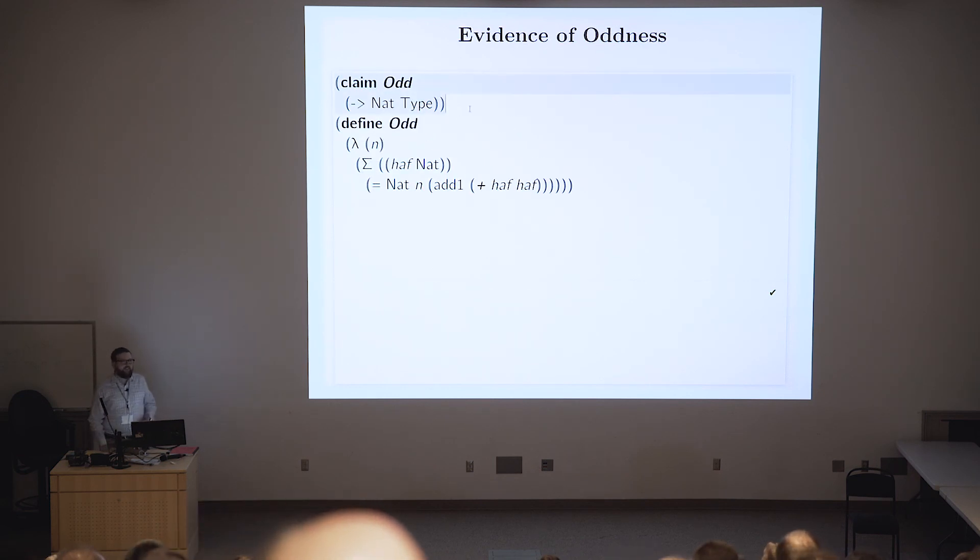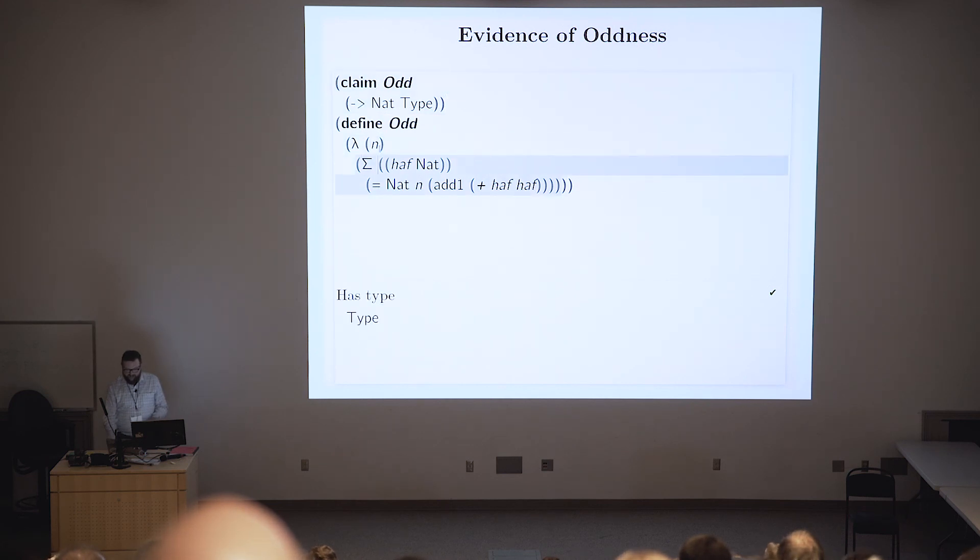And then we can talk about the evidence that a natural number is odd. Well, that's going to depend on which number we talk about. And so we're going to write that as a function which gives us back a type, which is perfectly reasonable. Programming languages that don't let you do this are restricting you. And so we have odd, which is we give it a nat, it gives it back a type. So we give it some nat n. And then it's going to return the type of pairs whose car is something that's almost half but not quite. So we call it half without the L. And then we also have evidence that n, the number we care about being odd, is equal to one greater than half plus half. Do you all agree that this is a good definition of oddness? Yeah. Excellent.